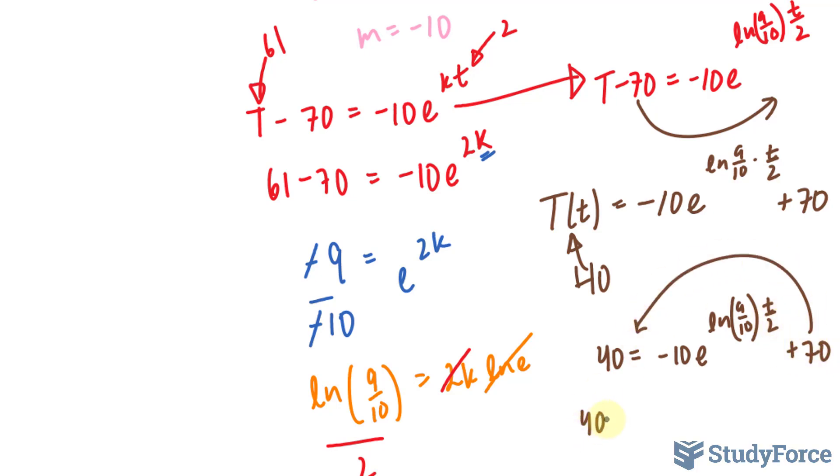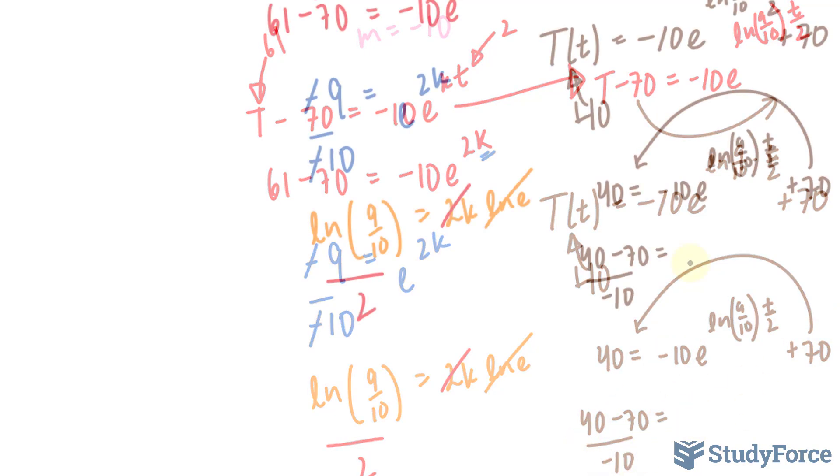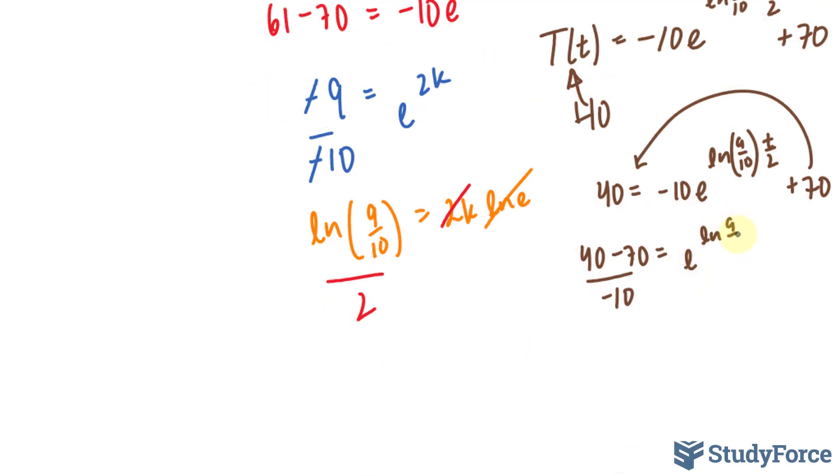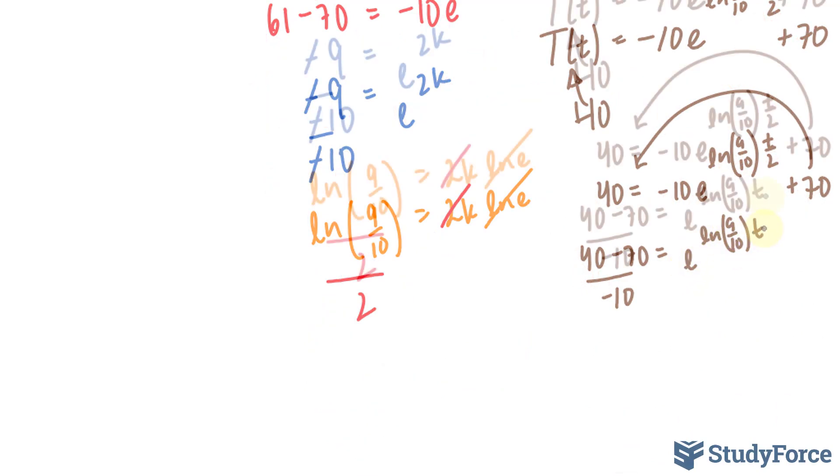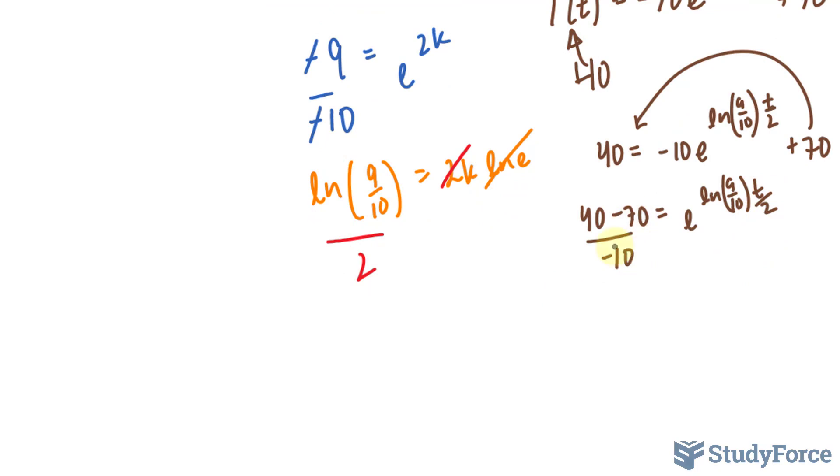I'll take that 70 over. I have 40 minus 70 is equal to. And at the same time, I'll divide both sides by negative 10. e^(ln(9/10) * t/2). 40 minus 70 is negative 30 divided by negative 10 gives us positive 3. e^(ln(9/10)) gives us 9/10, e to the power of ln goes away. And this is raised to t over 2.